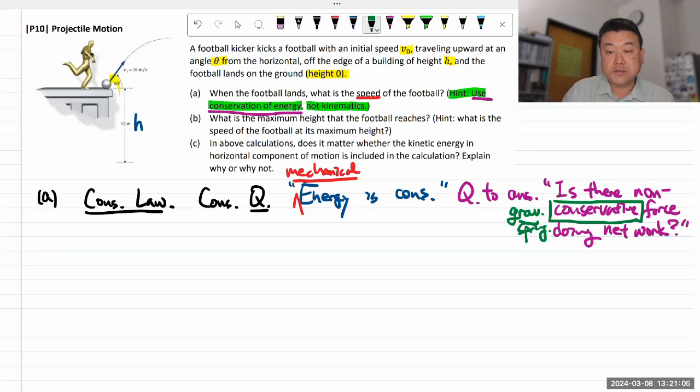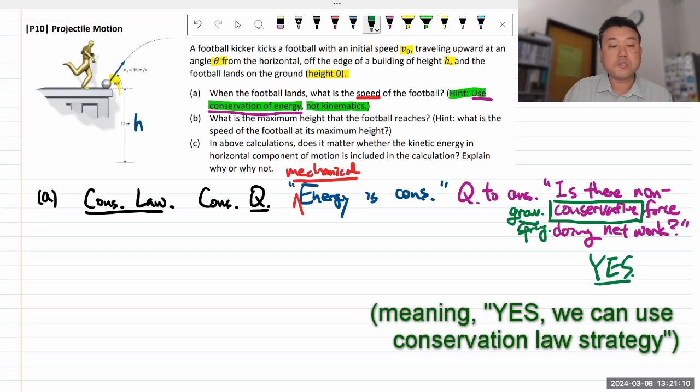So any work done will be done by gravity, a conservative force. So our answer here is big, yes. That allows us to use conservation law problem solving strategy. So that's the very first step you should engage. And in a lot of situations, it might actually be, if you just guess without going through the analysis, you might get lucky and guess, right? I recommend that you actually practice going through this reasoning process.